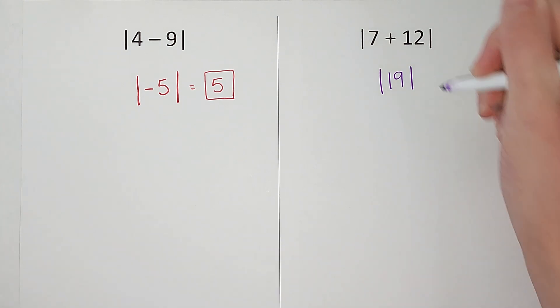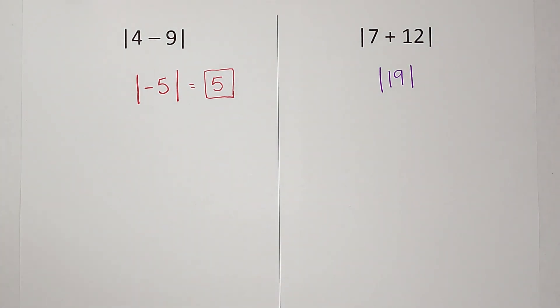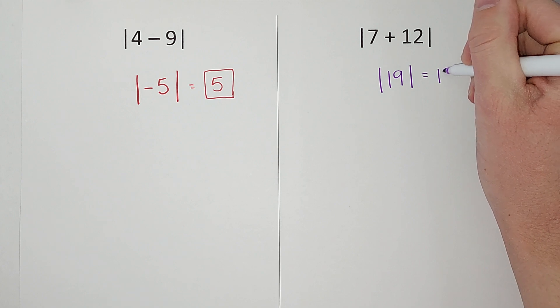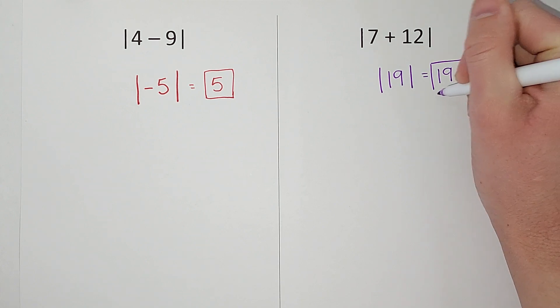Put our absolute value markers back. How far is 19 from zero? If I were to go from zero, go to 19, how many would I count? I would count 19.